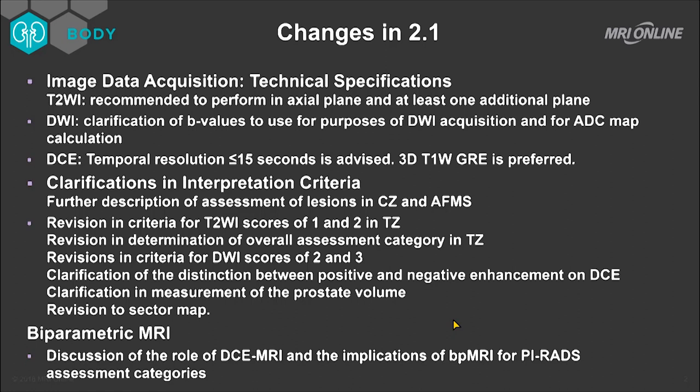What is biparametric MRI? In order to understand that, you need to know what multiparametric MRI is. Multiparametric MRI revolves around T2, diffusion weighted imaging, spectroscopy, and dynamic contrast enhanced MRI. In biparametric MRI, you're relying on two important criteria: the T2 weighted imaging and the diffusion weighted characteristics of the lesion, as evidenced on the diffusion weighted series and the ADC map.